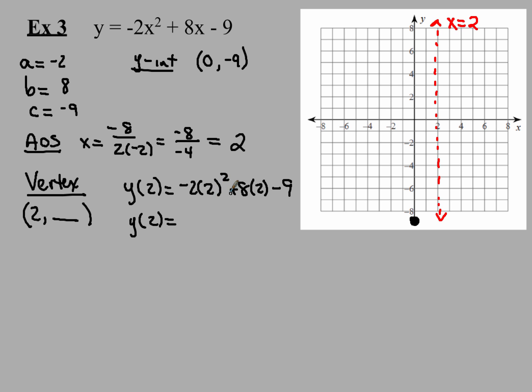y(2) equals, so be careful here - you can make careless arithmetic mistakes. 2 squared, remember, you've got to do exponents first. 2² is 4, then multiply by -2. 4 times -2 is -8. My next term, 8 times 2 is 16, and that -9. When I find the sum of those three integers, I get -1. So my vertex is at (2, -1), right there is where my vertex is going to be.